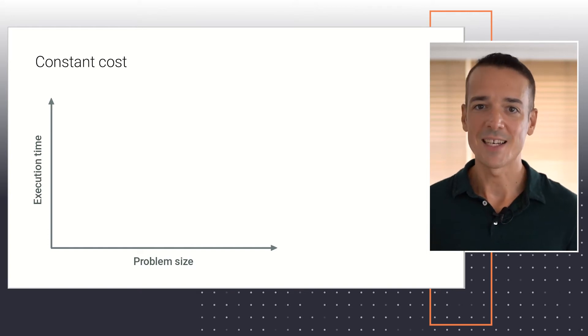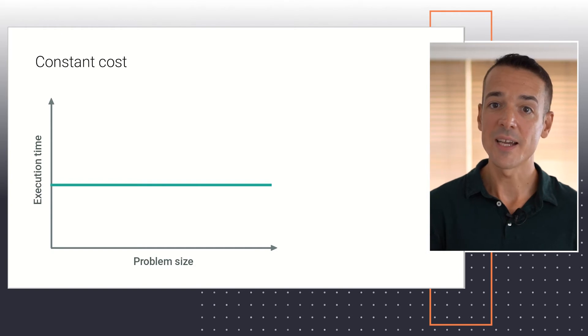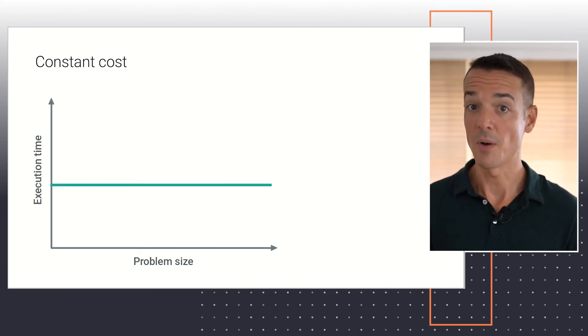A constant computational cost is characterized by a flat line, as shown here. And it doesn't matter whether this line appears higher or lower in the plot. All that matters is that the execution time doesn't increase as the problem size grows. On the plot, we can pick a given problem size and read the associated execution time. Then, we can observe that doubling or tripling the problem size provides the exact same execution time. That's what constant cost means.